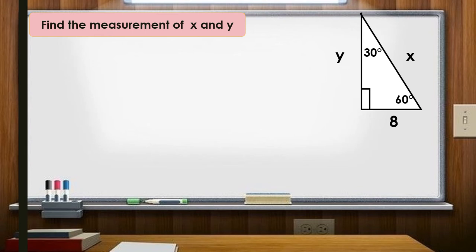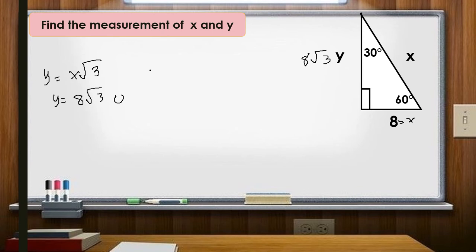Find the measurement of x and y. The shorter leg is x and the longer leg is x√3. Since the shorter leg is 8, x = 8. The longer leg y = x√3 = 8√3. The hypotenuse is 2x = 2 × 8 = 16 units. So y = 8√3 and the hypotenuse is 16 units.